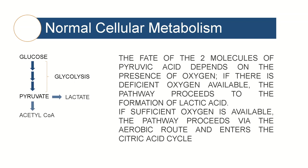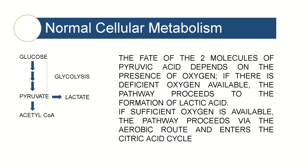Once we have pyruvate, we move into the pyruvate pathway, and there are a number of different outcomes that are possible. I'm only going to look at two of these: lactate and acetyl-CoA. The fate of the two molecules of pyruvic acid depends on the presence of oxygen in the cell. If there is deficient oxygen available, the pathway then proceeds to the formation of lactic acid.